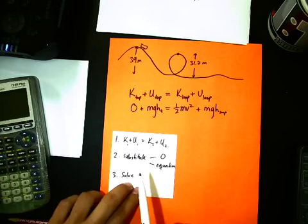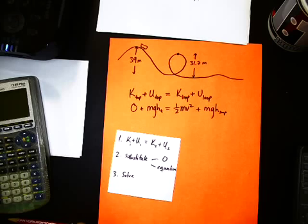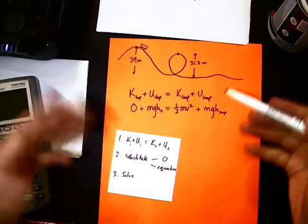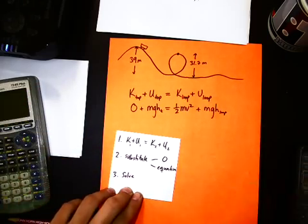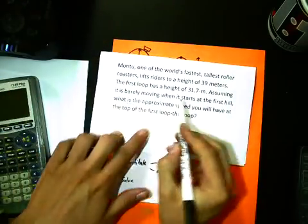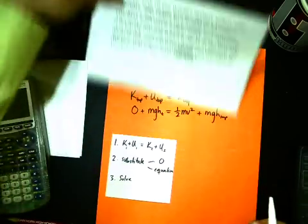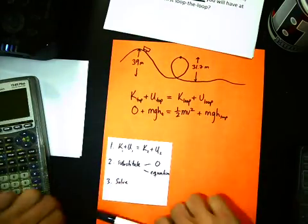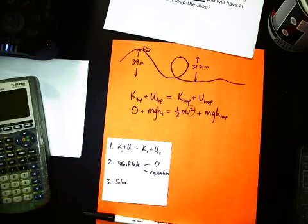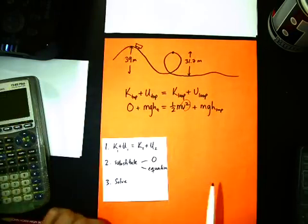So step three is to solve. So like I was saying in class, really, the physics is over. We've done all the physics. We've thought about energy. We've sorted out zeros and which has energy, which doesn't, yada, yada, yada. We drew a nice little picture. Now we've just got to do some algebra. What are we looking for? The question says, what is your approximate speed at the top of the loop? Again, speed is velocity. Velocity is V. So we're looking for this V right here. That's actually the only V in that equation.